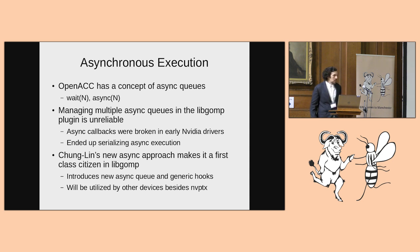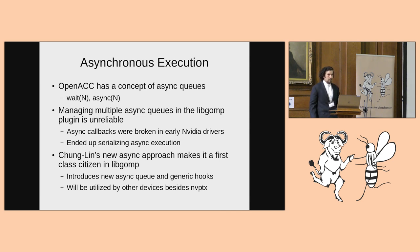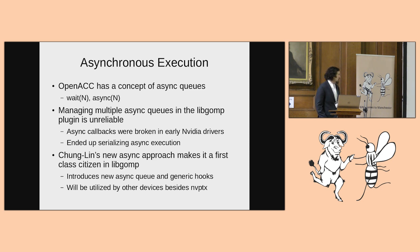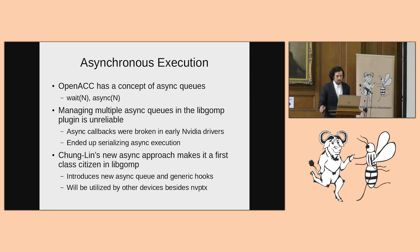Chung Lin on our team at Mentor came up with a new approach: he made async queues a first-class citizen in libgomp and added a couple of generic hooks for the plugins to implement. At first this seems specific to OpenACC or NVPTX, but other GPUs would need it too.